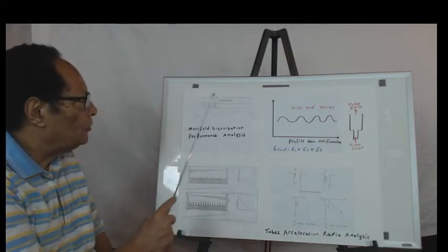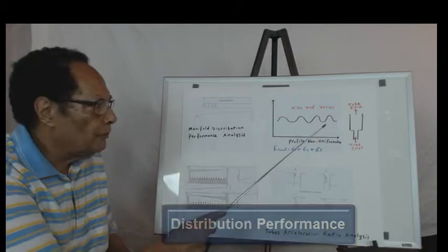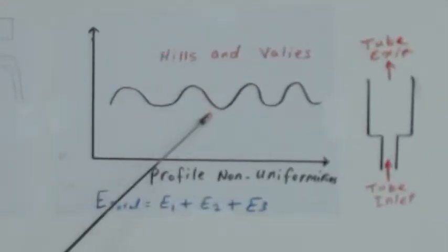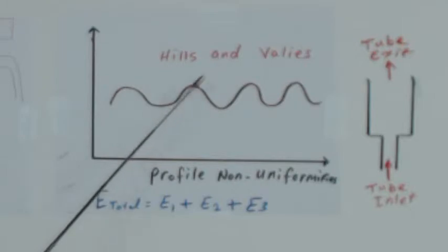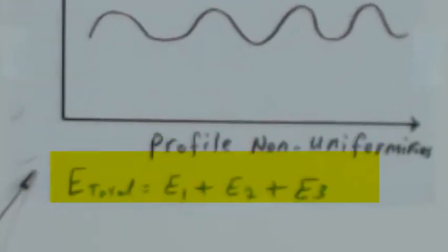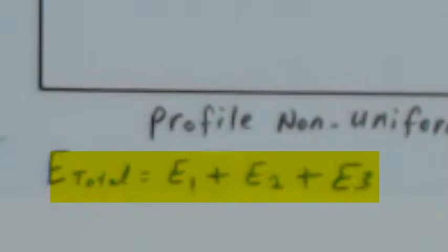When you look at the distribution performance of the manifold header as far as the tubes, you end up with something like that, where hopefully there is a flat profile. But it's hardly unlikely that there is anything called flat - it's hills and valleys. When you look at this non-uniformity, I call it E total.